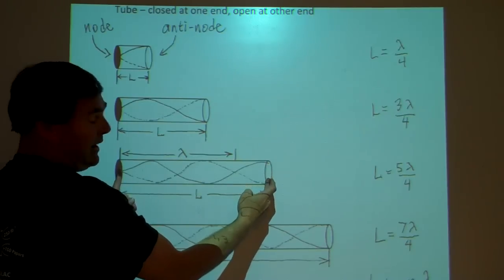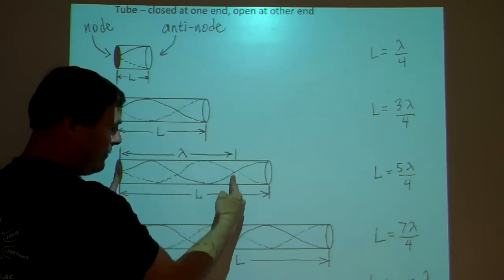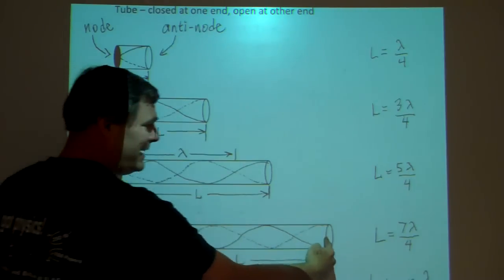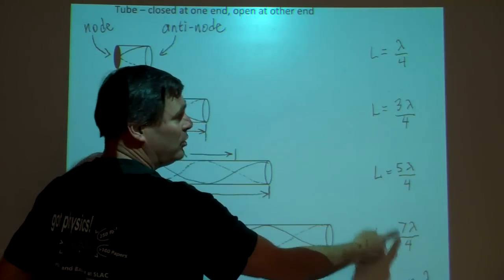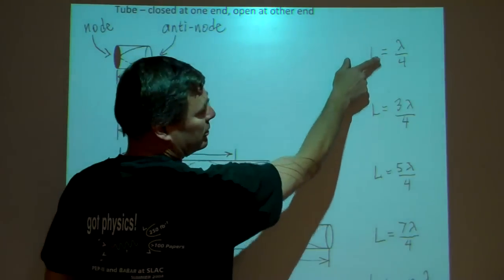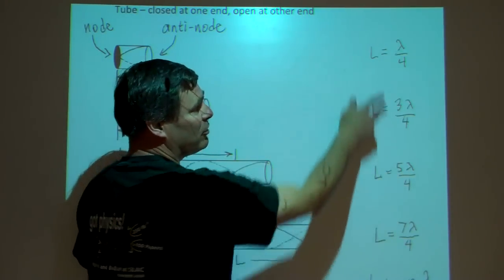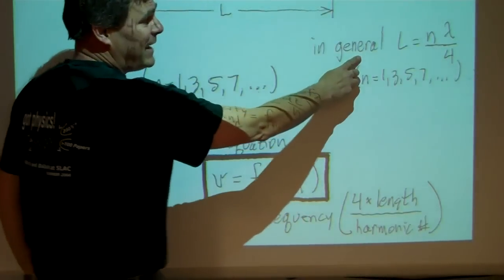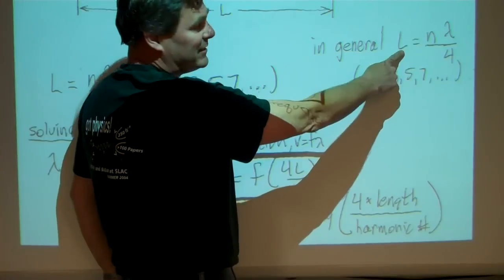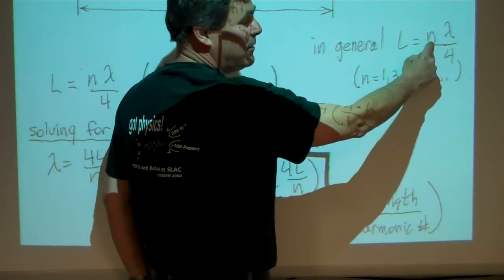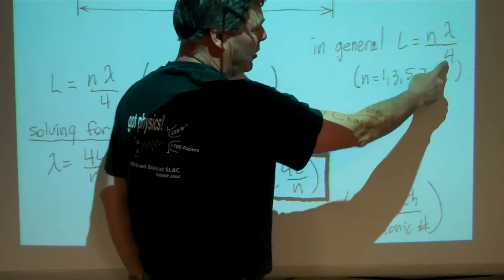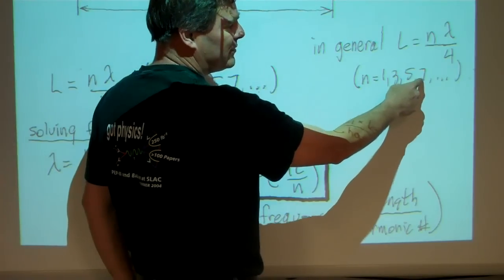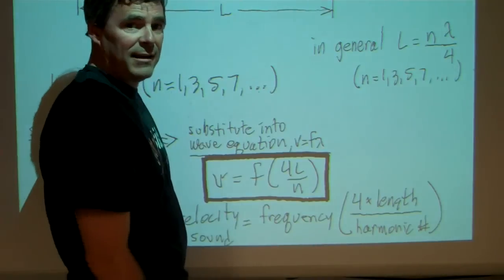My third standing wave that I hear is at a wavelength plus another quarter, or five-quarters of a wavelength. The next one is seven-quarters of a wavelength. You can see that each standing wave occurs at half wavelength multiples, starting at one-fourth of a wavelength. In general, then, we can say that the length of the tube at any of the standing waves is equal to some number n times a quarter of the wavelength, where n is an integer equal to one, three, five, seven, and so on, for each successive standing wave that we hear.